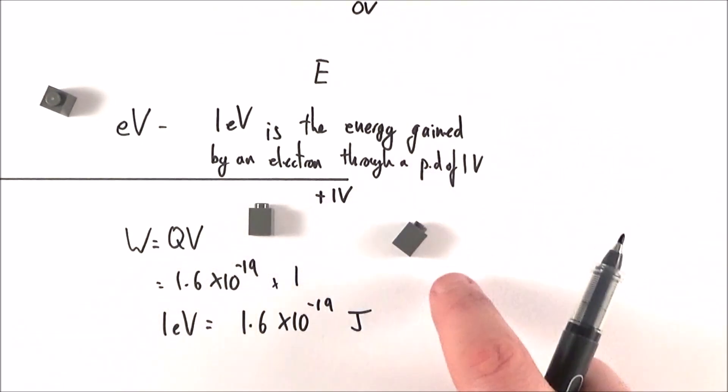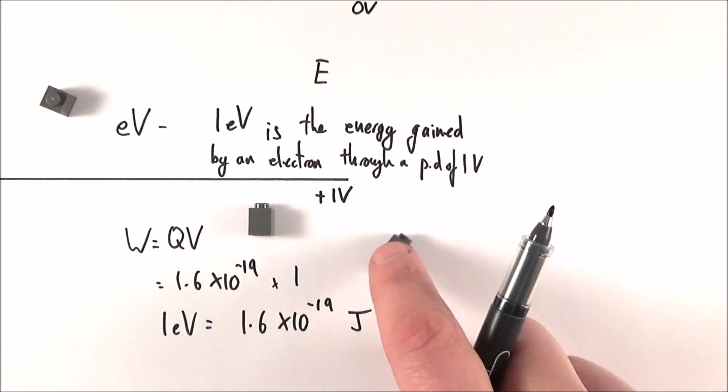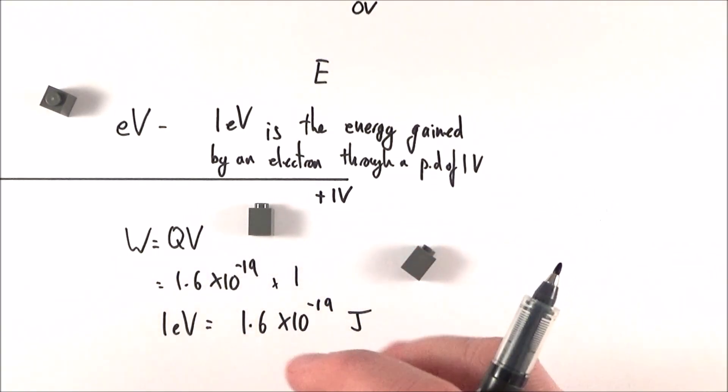So although the actual energy of one particle might not be that great, because we have so many billions of them all at once, that can give us the large energies that we get up to. And you need to know about the electron volt for some of the work to come.